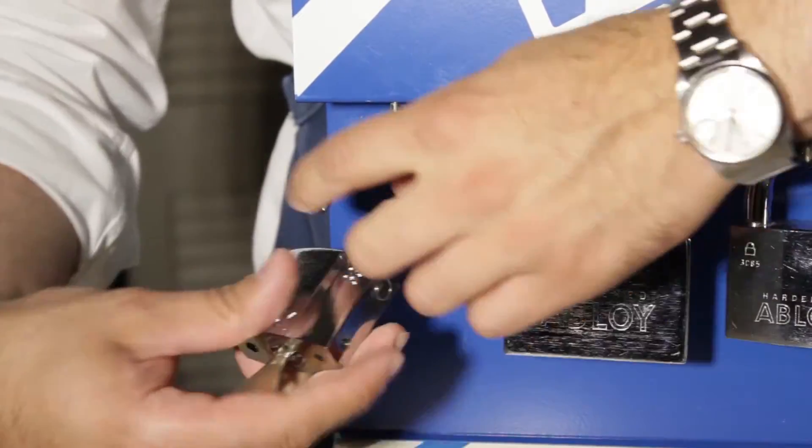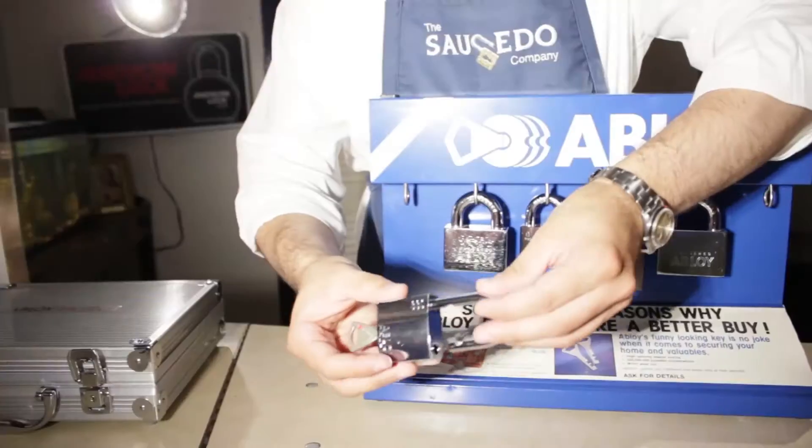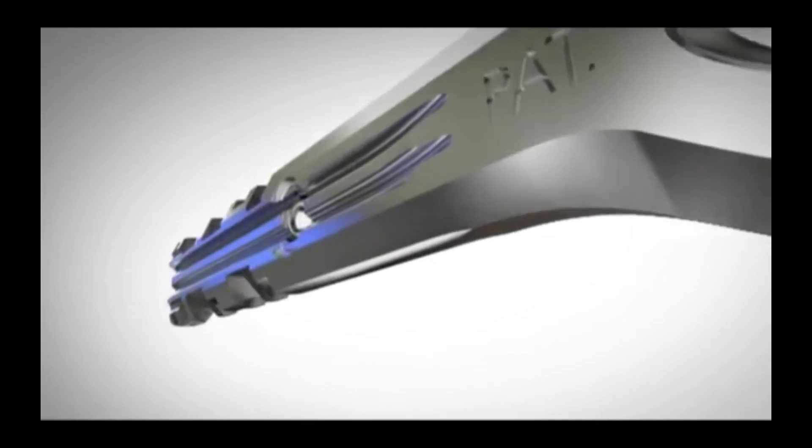Abloy has up to 1 billion different combinations. What a lock! Nobody can make keys without your permission. That's the Saucedo Promise.